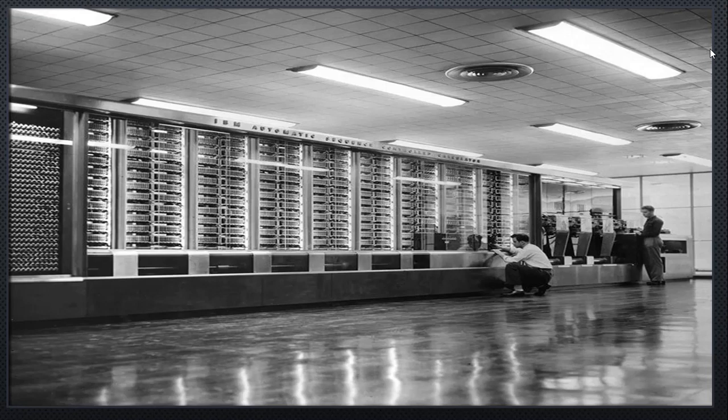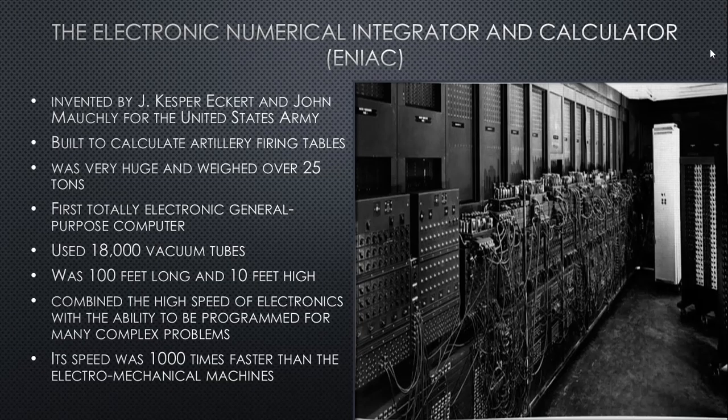The Electronic Numerical Integrator and Calculator — ENIAC — was invented by Caspar Eckert and John Mauchly for the United States Army. It was built to calculate artillery firing tables. It was very huge and weighed over 25 tons, because vacuum tubes occupy more space. The ENIAC was 100 feet long and 10 feet high, and combined the high speed of electronics with the ability to be programmed for many complex problems. It was 1,000 times faster than the electromechanical machines.